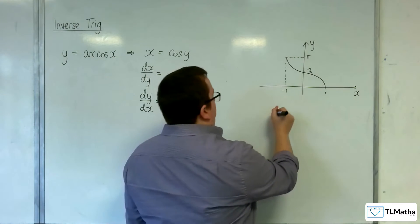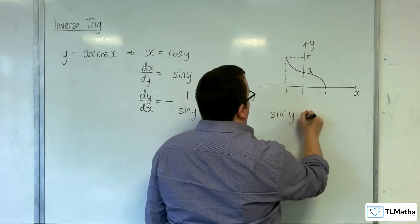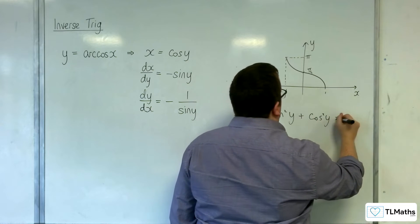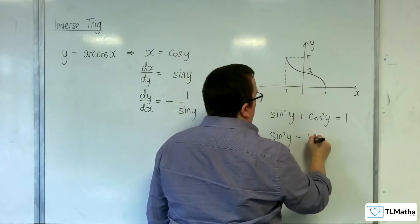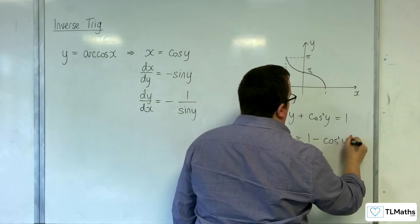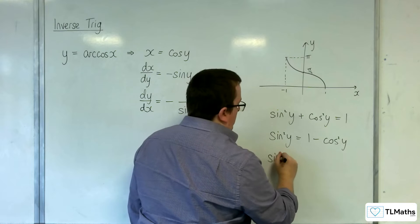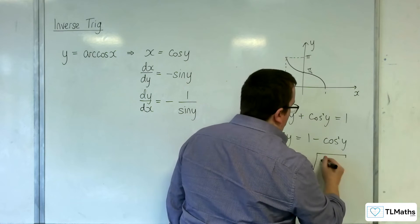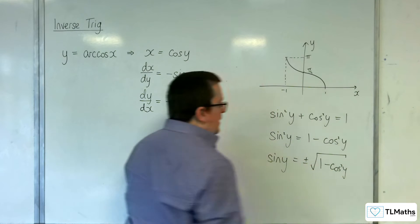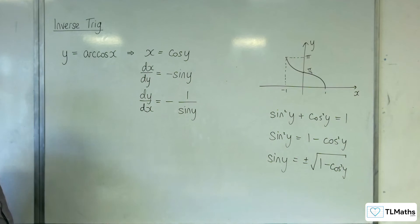Now, we know that sine squared y plus cosine squared y is equal to 1. So sine squared y is equal to 1 minus cosine squared y. So sine of y must be equal to plus or minus the square root of 1 minus cosine squared y.